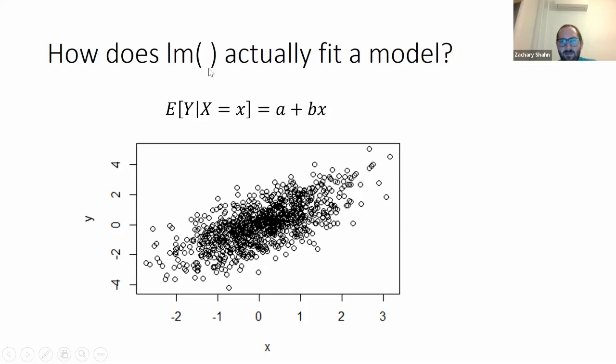How does this LM function in R actually fit the regression model? You have the assumption that the expected value of y, given that you observed that the predictor takes some value, is described by a line, right? It's a plus bx.